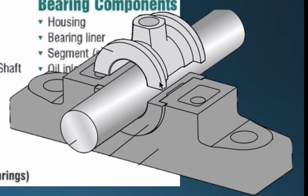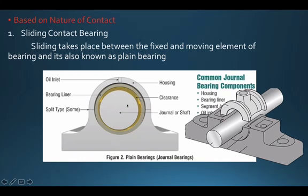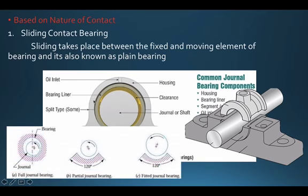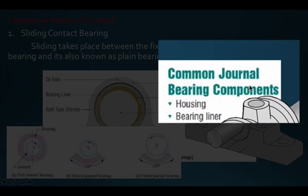Here is a better picture of the bearing. We have a moving shaft, also known as the journal — the shaft within the bearing is what we call the journal. There is a bearing cap, and between the bearing cavity and the shaft there is a clearance. Through that clearance, we supply oil. This lubricant helps reduce friction and build up pressure. The components of the bearing are the journal, clearance, housing, and the bearing liner.